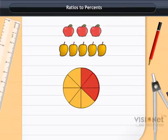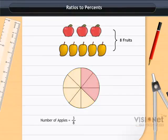The total number of fruits is 3 plus 5 equals 8. This means 3/8 part is apples and 5/8 part is mangoes.